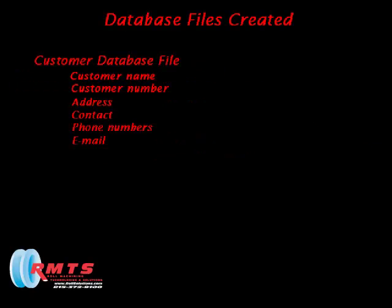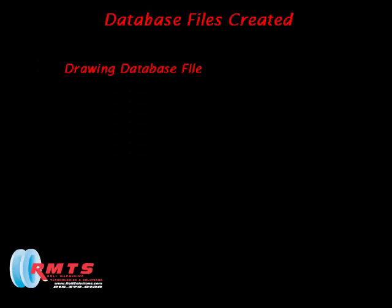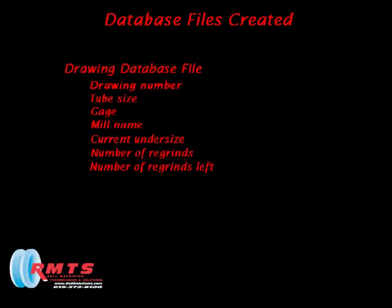6. The customer database file contains the standard information for the customer, such as customer name, customer number, address, phone, contact, and so on. 7. The drawing list database contains the basic information for the particular set of tooling, such as drawing number, tube size, gauge, mill, current undersize, number of regrinds, and so on.